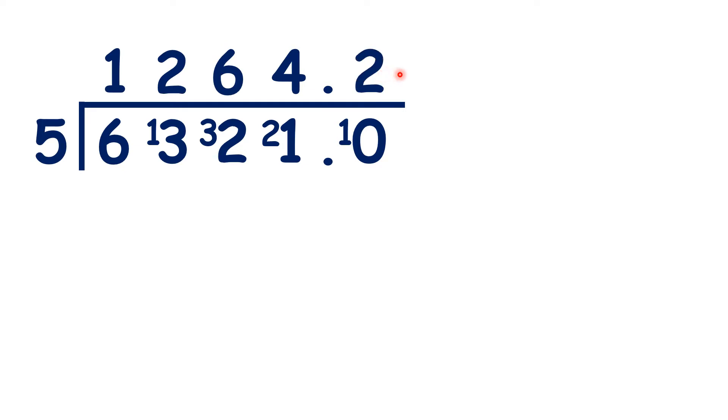So rather than giving our answer as 1,264 remainder 1, or 1,264 and 1 fifth, we can give our answer as a decimal instead.